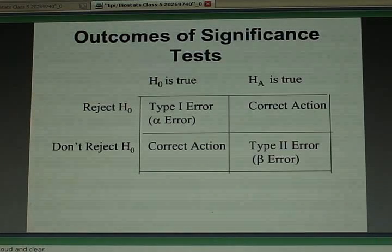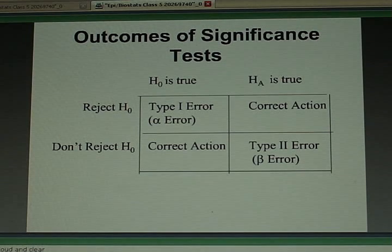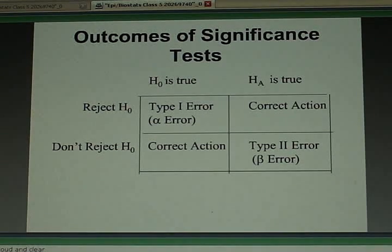So how do statisticians get around this dilemma? They say, well, we can't get around the fact that you always have the potential of making both of these errors. What I'll do is I'll declare something to be statistically significant. Choose a threshold for my p-value.